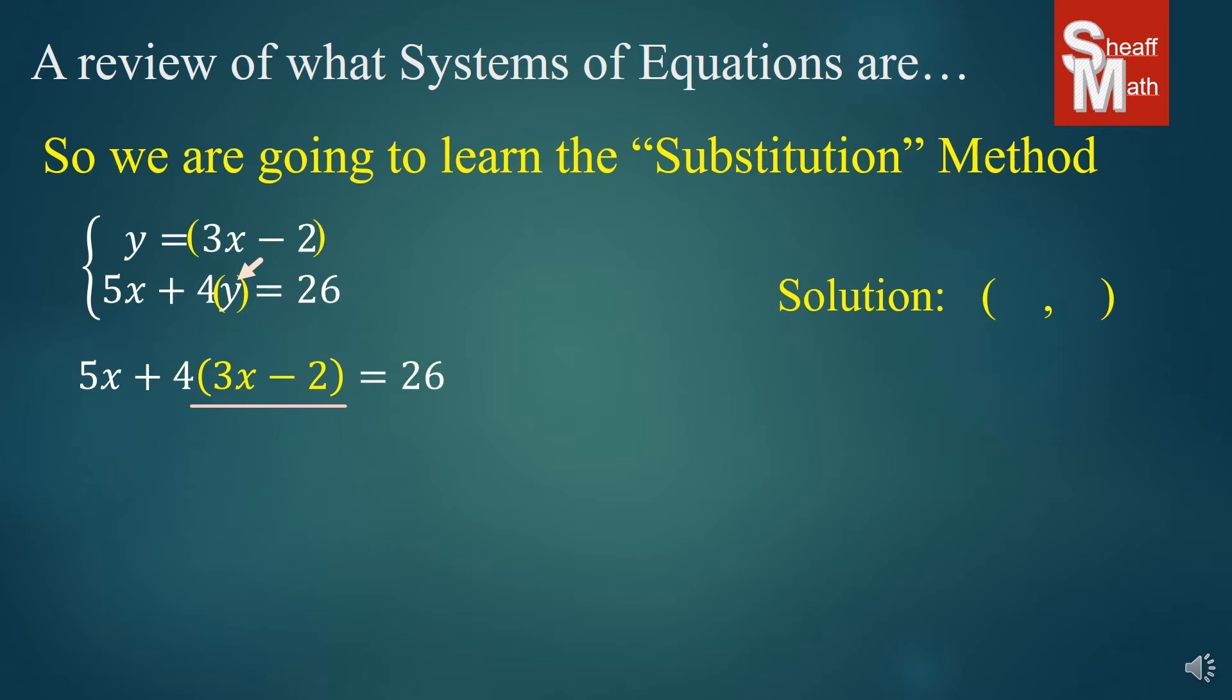I'm going to rewrite that bottom equation. 5x plus 4, and instead of y, I put 3x minus 2 in parentheses, equals 26. Now, what I have to do is solve for x. I'm going to distribute that 4, simplify. I'm going to add like terms. Now I've got a two-step equation. I'm going to add 8 to both sides. 17x equals 34, divide by 17, and x equals 2.